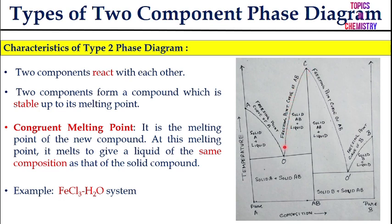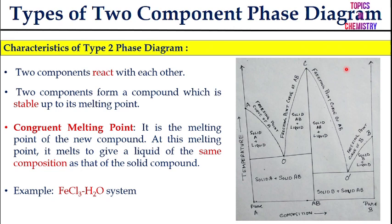In the Type 2 diagram, the regions are: solid A + solid AB, solid B + solid AB, solid A + liquid, solid AB + liquid (two such regions), and liquid B + solid. The central region at the top is all liquid.